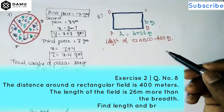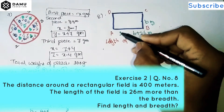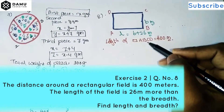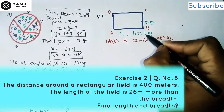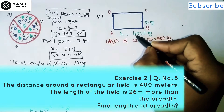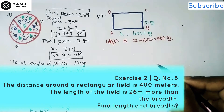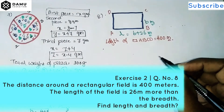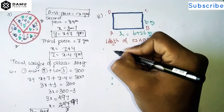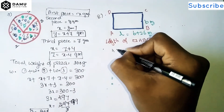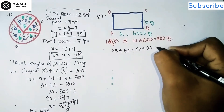Now we're going to discuss question 8. The distance around the rectangular field — that is, the perimeter of rectangle ABCD — is 400 meters. The length of the rectangle field is 26 meters more than its breadth. We take length as l and breadth as b. We have to calculate the length and breadth of the field.